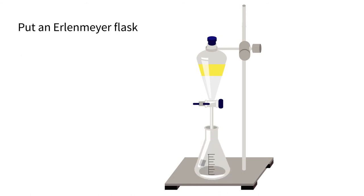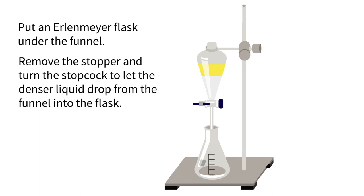Put an Erlenmeyer flask under the funnel. Remove the stopper and turn the stopcock to let the denser liquid drop from the funnel into the flask.